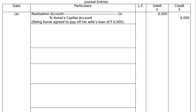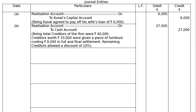Part B: Total creditors of the firm were Rs.40,000. Creditors of Rs.10,000 were given a piece of furniture costing Rs.8,000 in full settlement, meaning Rs.10,000 is closed. Remaining creditors of Rs.30,000 were allowed a discount of 10%, so we paid Rs.27,000. Taking over of the furniture is never written in the journal entry. Entry: Realization Account debited to Cash Account Rs.27,000.